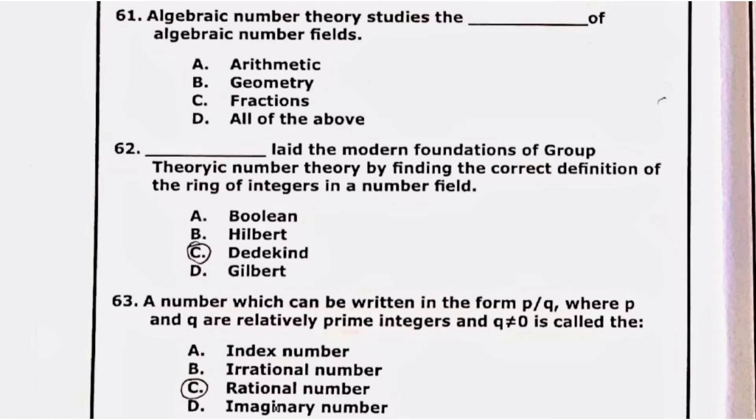62 is Dedekind laid the modern foundation of group theoretic number theory by finding the correct definition of the ring of integers in a number field. Option C is correct. A number which can be written in the form P over Q where P and Q are relatively prime, then it is a rational number.